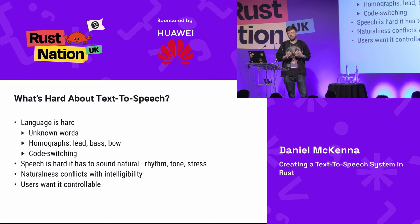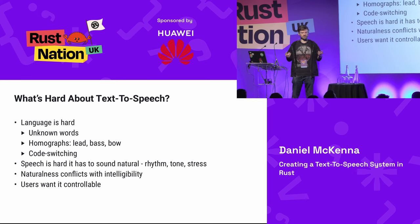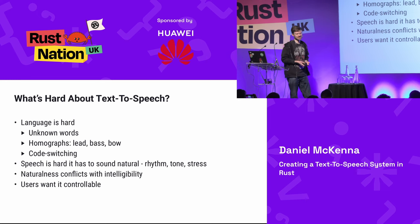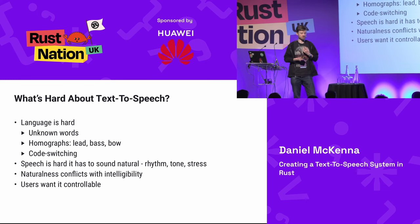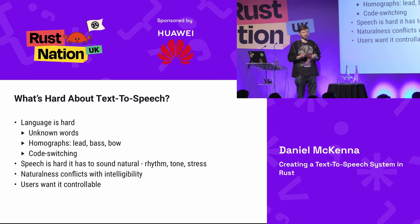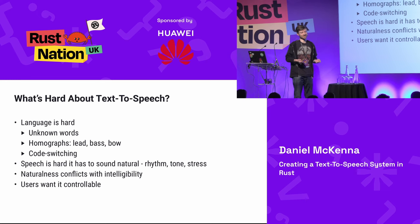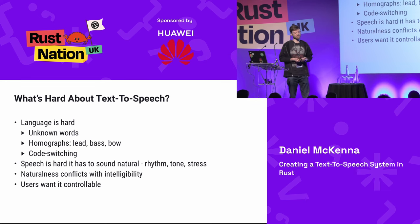What's hard about text-to-speech? Language is hard. We have unknown words — you'll train your system, and then someone creates a new company with a name you've never seen, and you have to figure out how to say it. You have homographs: lead/lead, bass/bass. And you have code switching — if you do Arabic text-to-speech, customers often put English words in, often proper nouns. No one's bothered translating 'Kubernetes cluster' to Arabic — they just say it in the middle of a sentence.